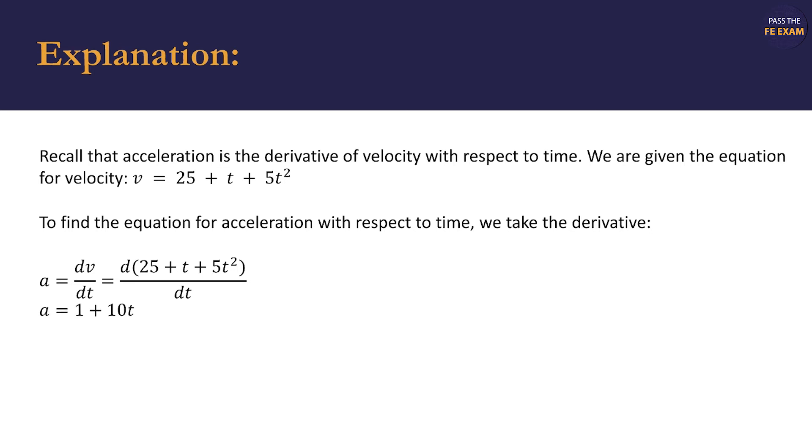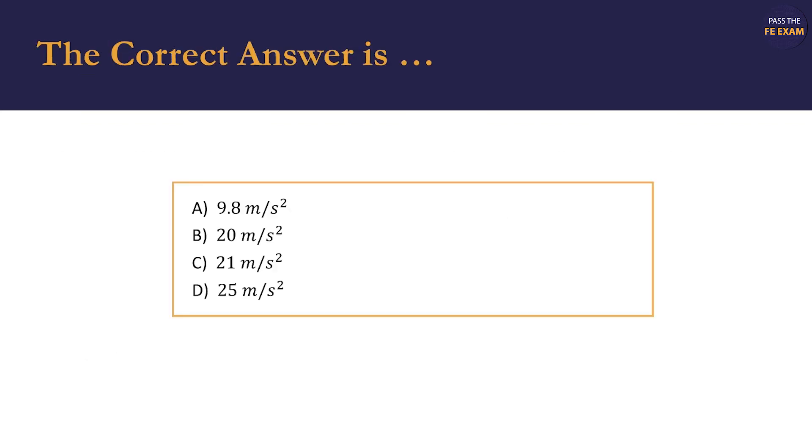We're asked to find the acceleration at 2 seconds. We can substitute in 2 seconds for our variable t, and we find that the acceleration is 21 meters per second squared. Going back to our list of possible answers, we see that this is answer C, the correct answer.